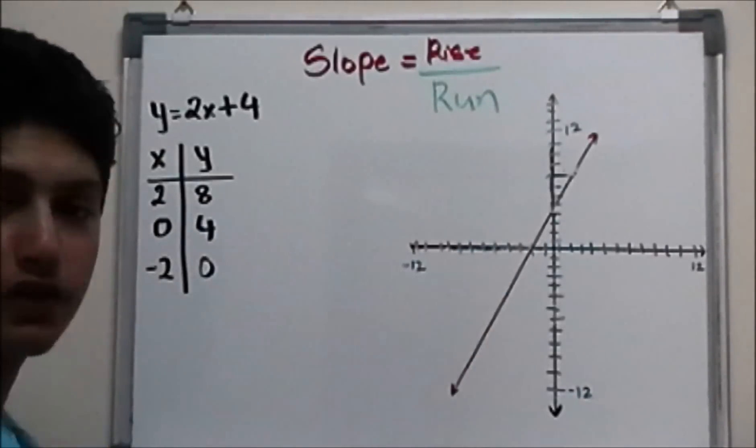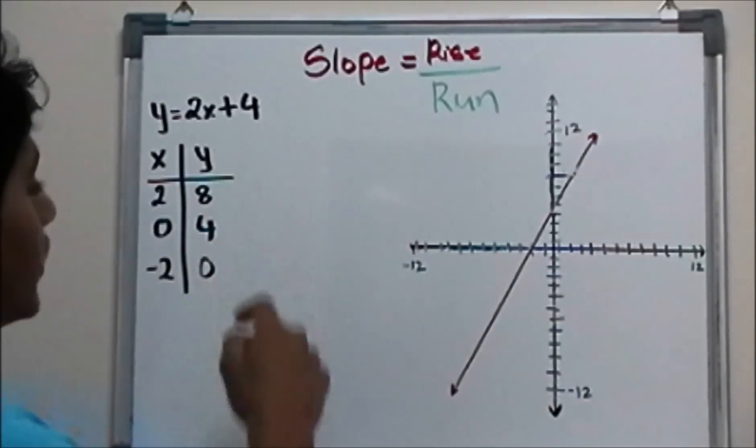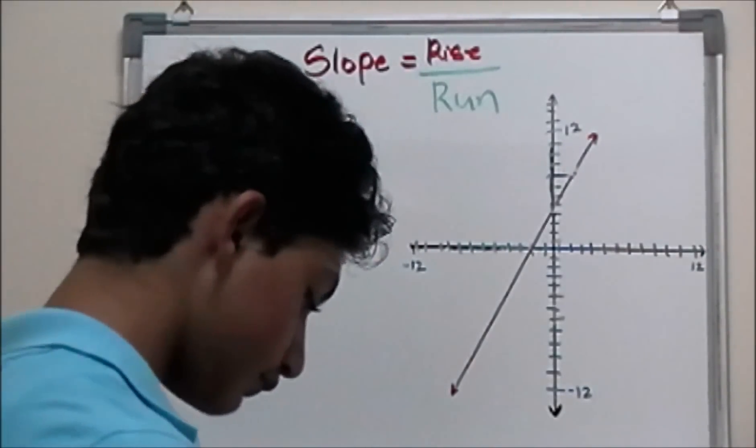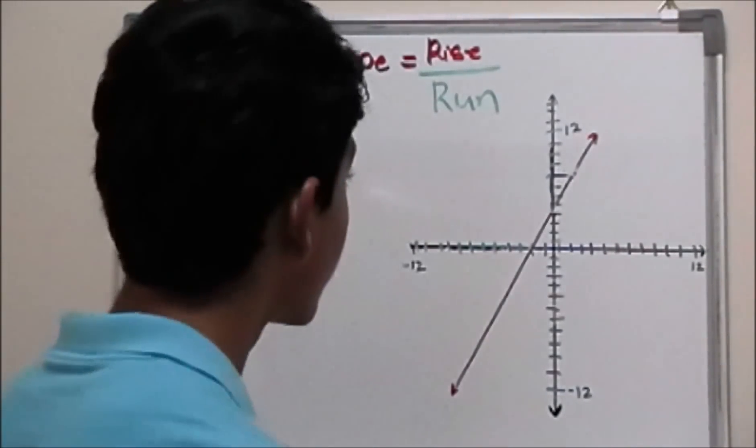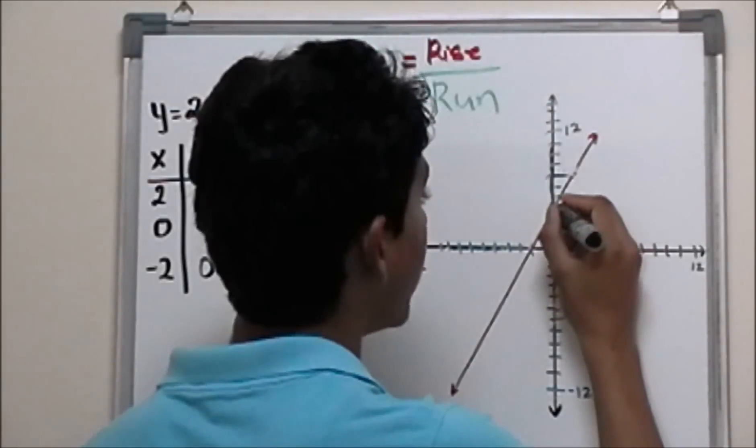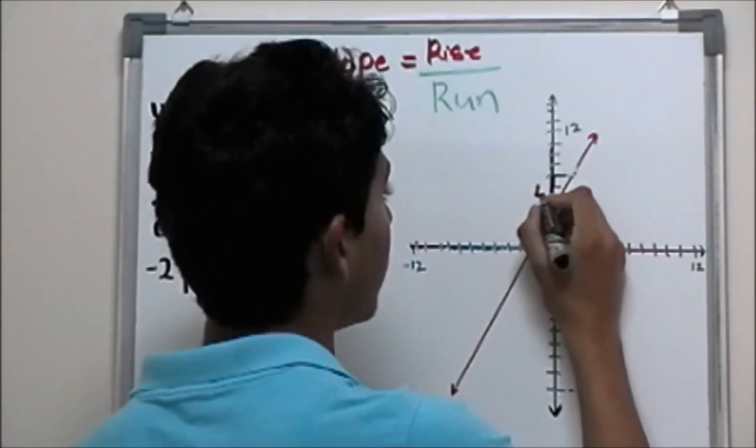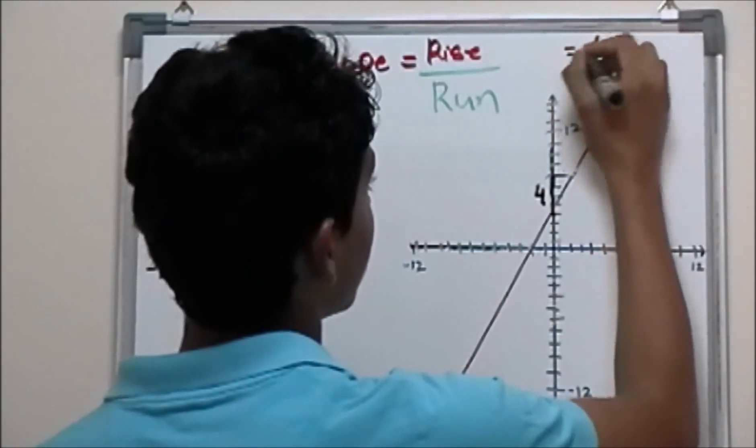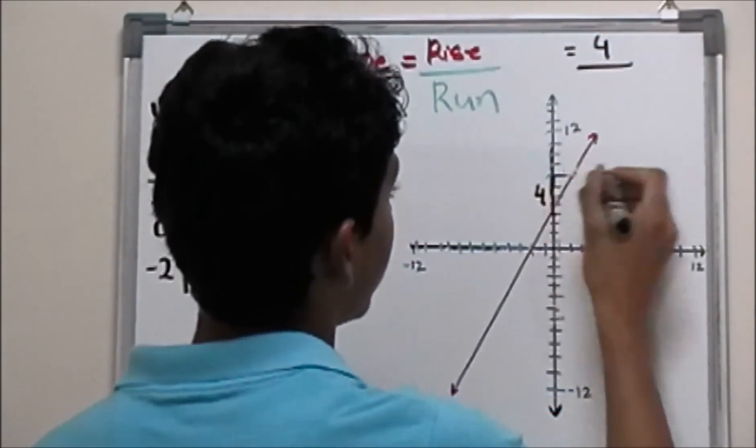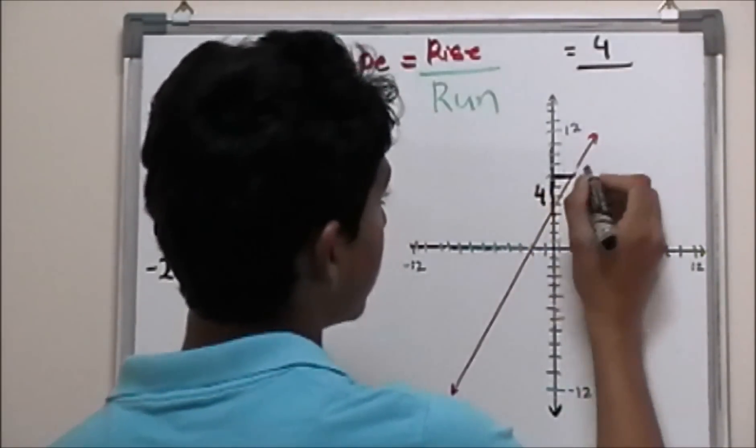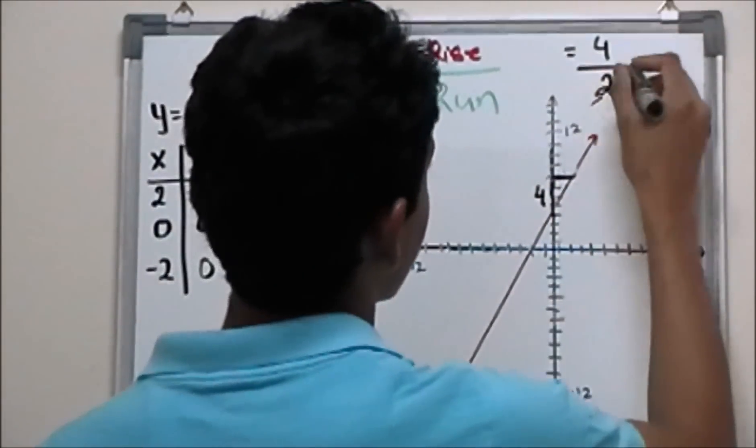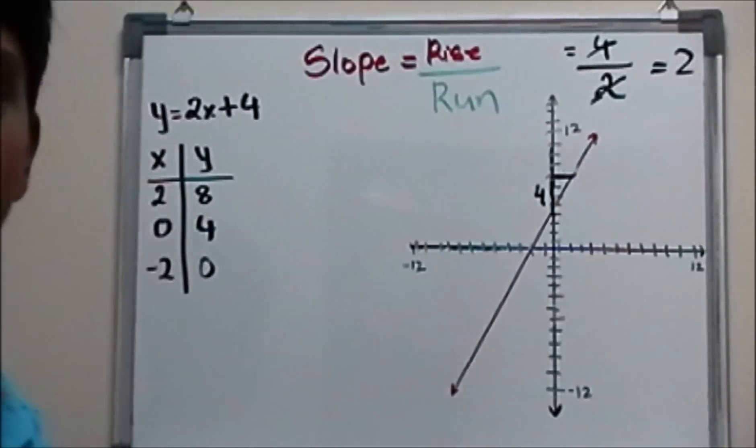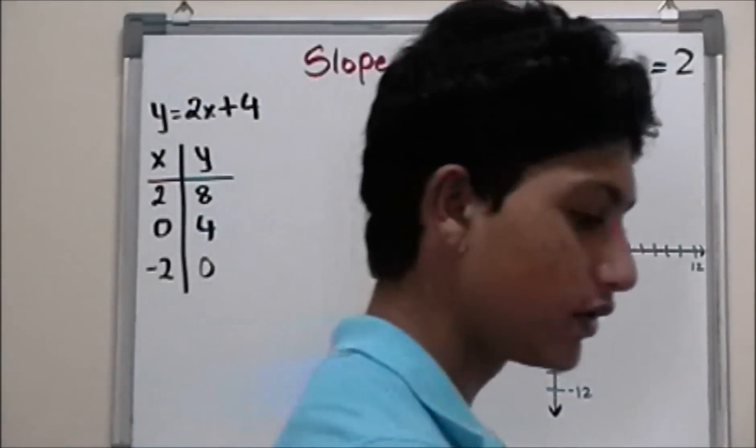Let's do rise over run here for this equation and let's find the slope. So we move 1, 2, 3, 4. Four is the rise. For rise we have 4, and for run we have 1, 2. Four divided by 2 is 2. The slope of the line is 2.